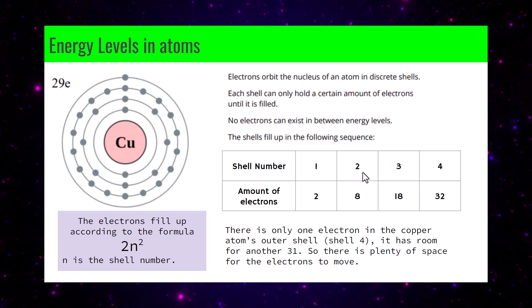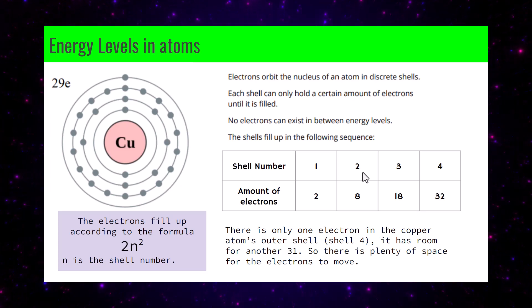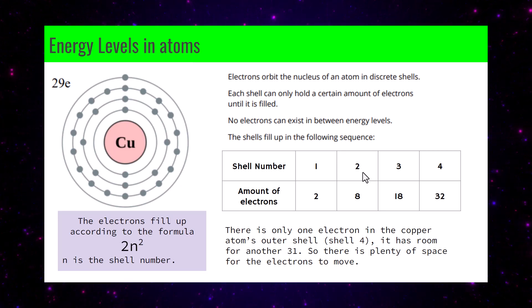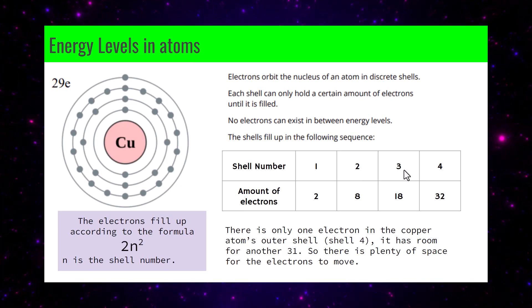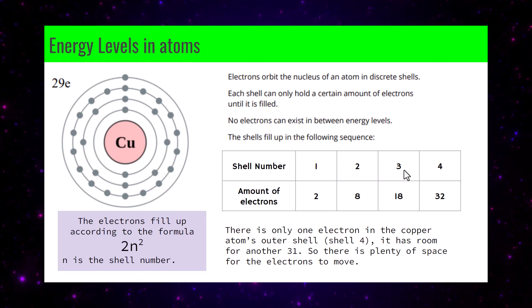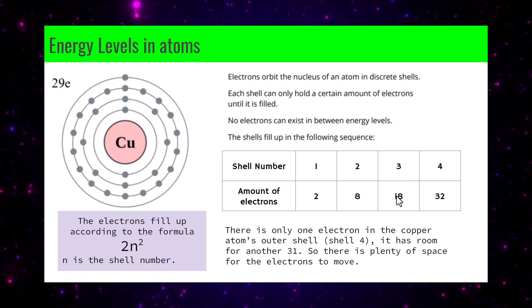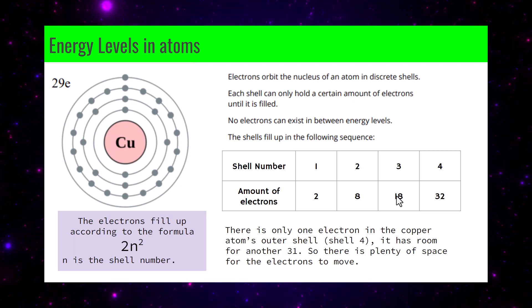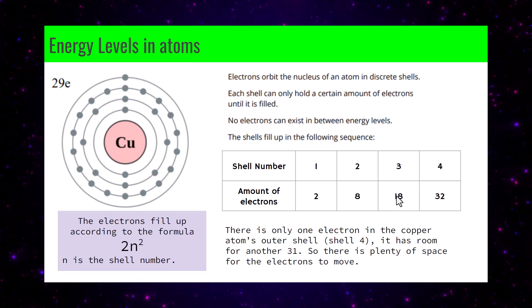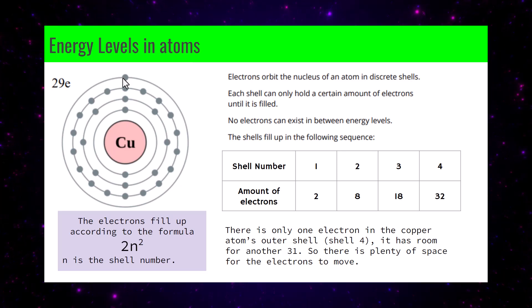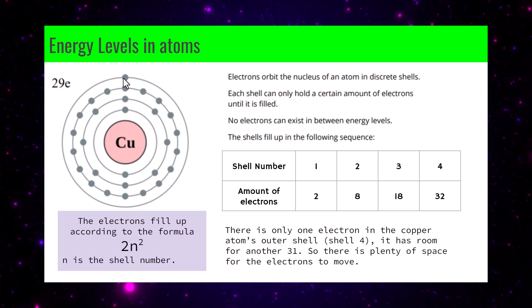For the second shell, 2×2²=8 spaces, all filled. For the third shell, 2×3²=18 spaces, also filled. But look at the fourth shell: 2×4²=32 possible spaces, and there's only one electron there. That means there are 31 extra spaces, so electrons have plenty of space to move about — therefore copper is a fantastic conductor.